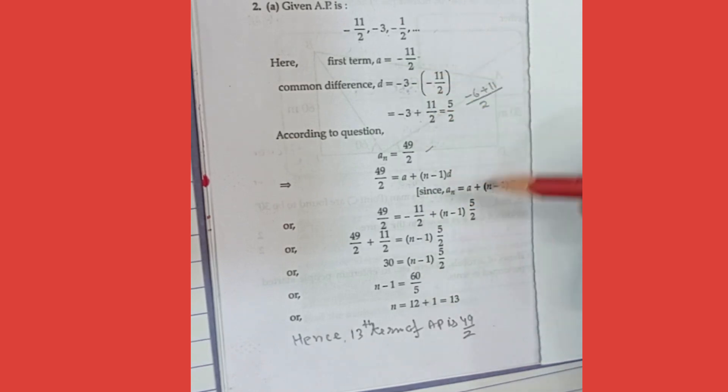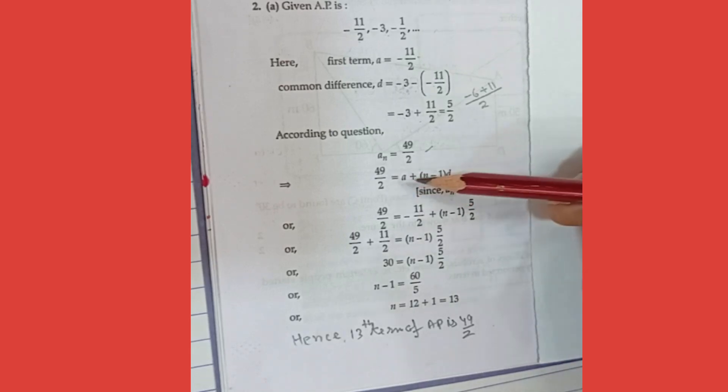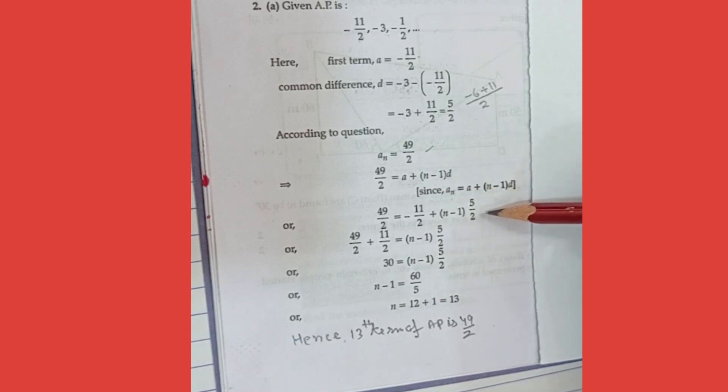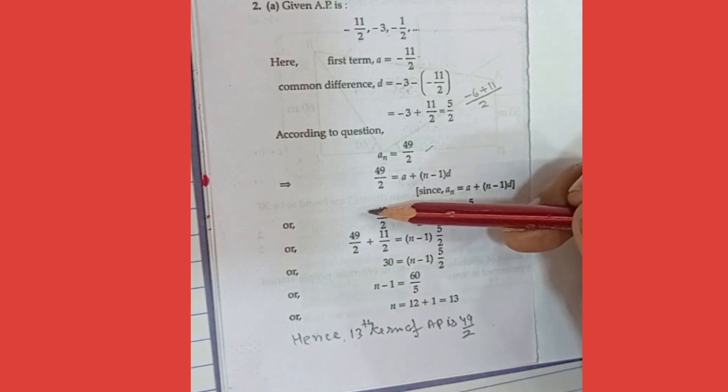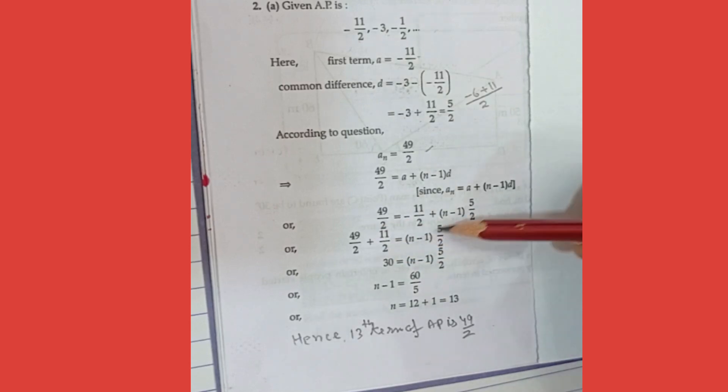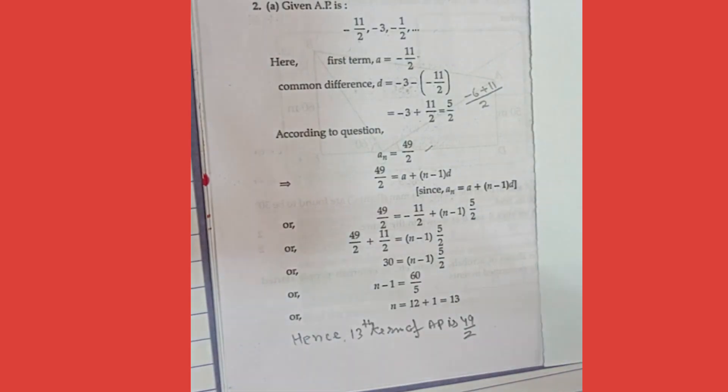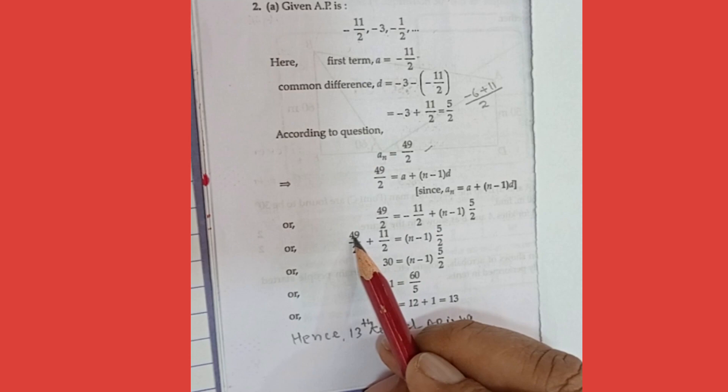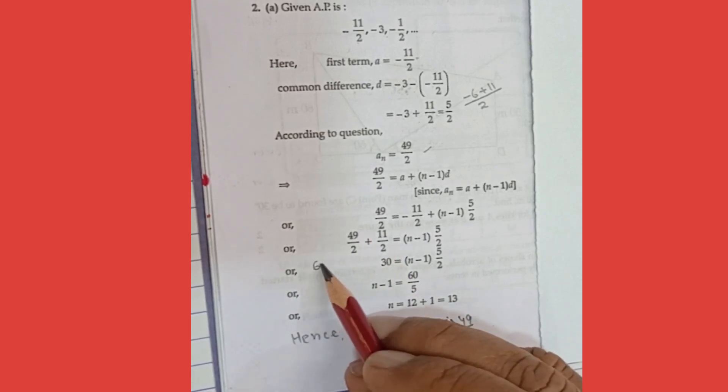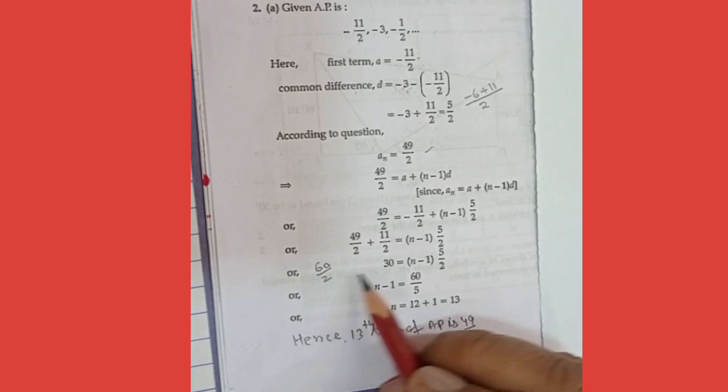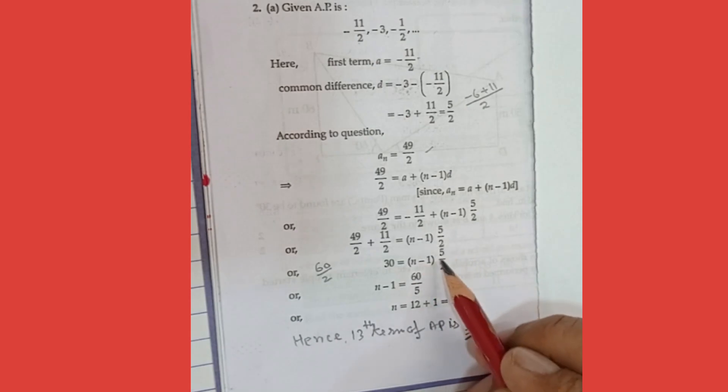So AN is given to you, 49 upon 2, then is equal to A's value is minus 11 upon 2, then N is unknown, N minus 1, then D's value is 5 upon 2. So transfer this 11 upon 2 to left side. So 49 upon 2 plus 11 upon 2 is equal to N minus 1, 5 upon 2. Now you add them, 49 plus 11 is 60, so this becomes 60 upon 2. The value is equal to 30.